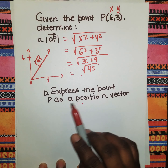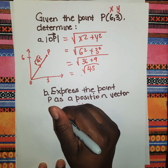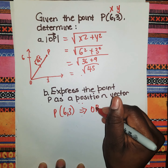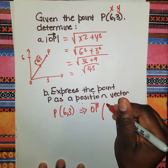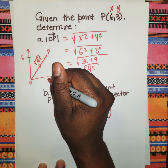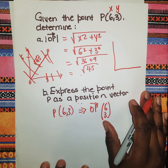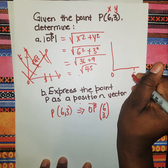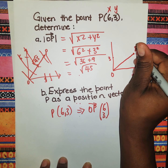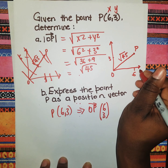You can always construct this by drawing your Cartesian plane, locating the point P(6, 3), and drawing OP — noting this is not drawn to scale. The next part asks us to express point P as a position vector. Since P = (6, 3), as a position vector this is written as OP, and in column vector form it is (6, 3).